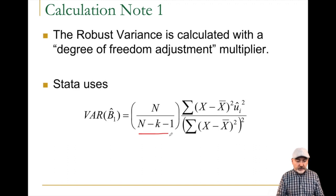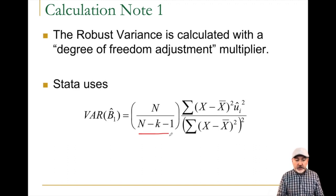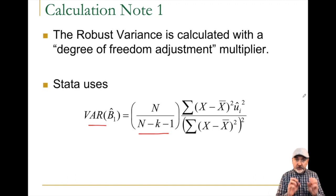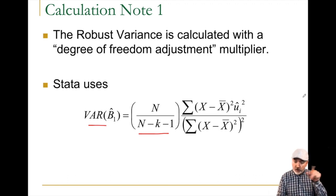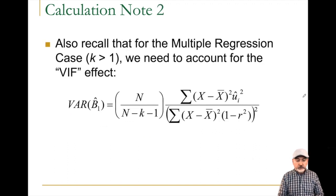Technically, to replicate what Stata does, there is a built-in degree-of-freedom adjustment: n over (n minus k minus 1) times that term gives the variance, and taking the square root gives the standard error shown in the regression output when you use the comma robust option.